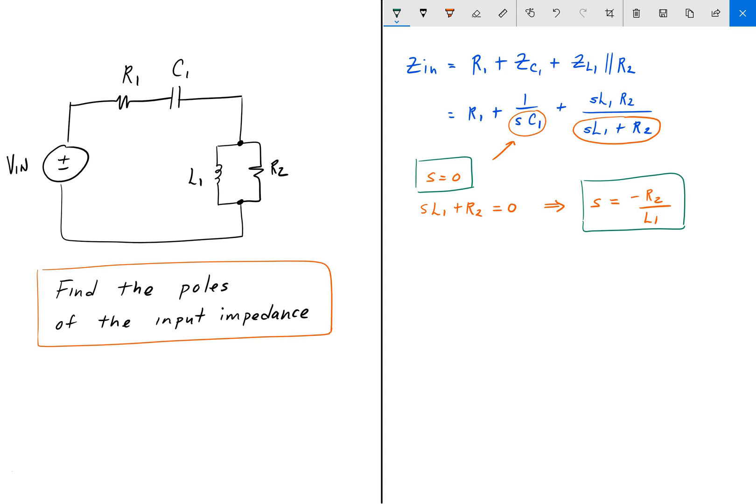And if you were asked to find the zeros of this circuit, you would just take the numerator and set that equal to zero and then solve for S.